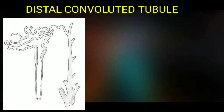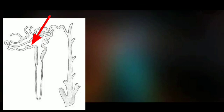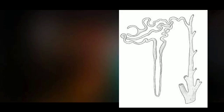The distal convoluted tubule is the continuation of the thick ascending segment of the loop of Henle. It comes very close to the vascular pole of the renal corpuscle and opens into the collecting tubules. The collecting tubules join together to form collecting ducts, which pass from the medullary rays to the apex of the pyramids.